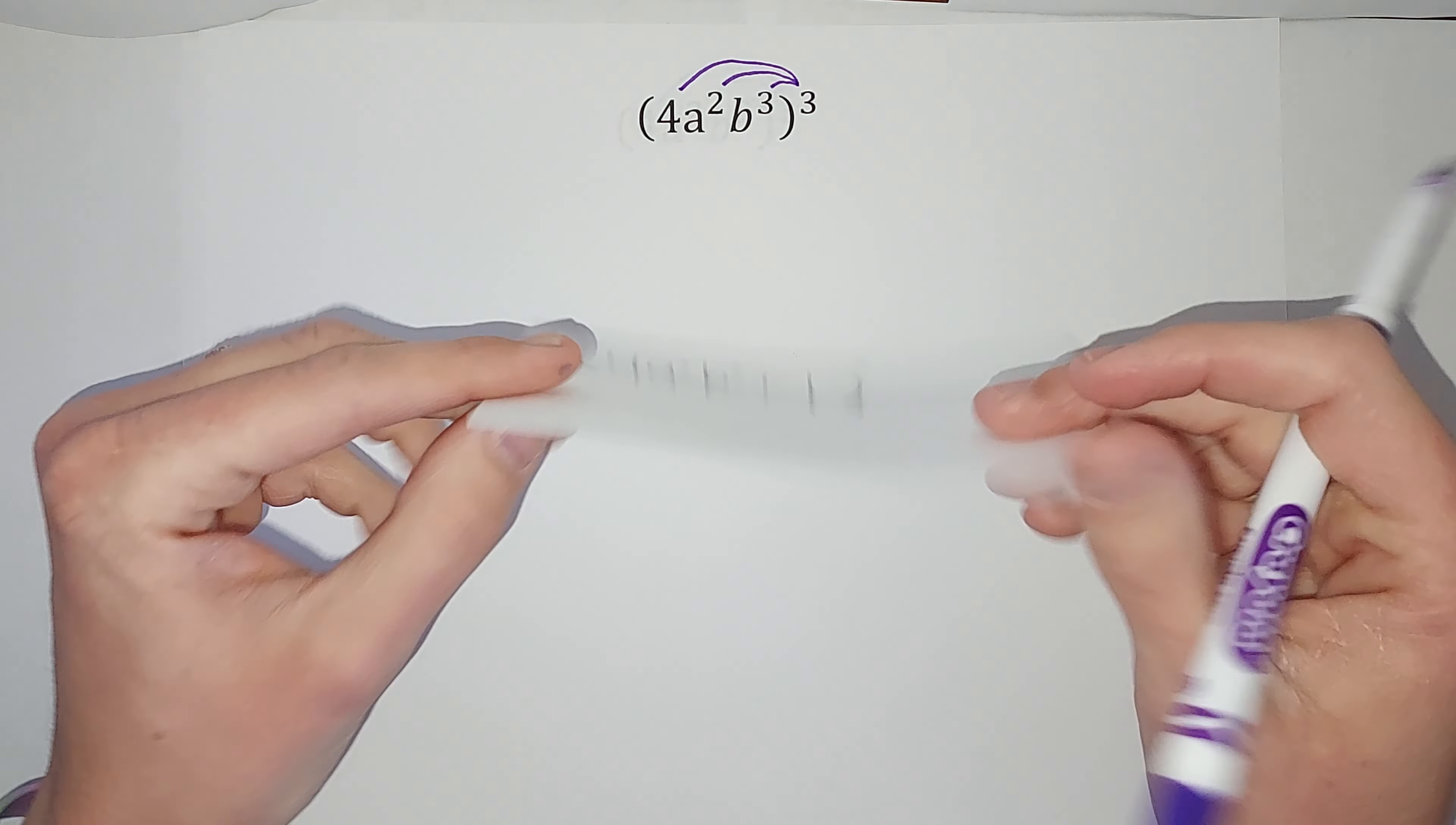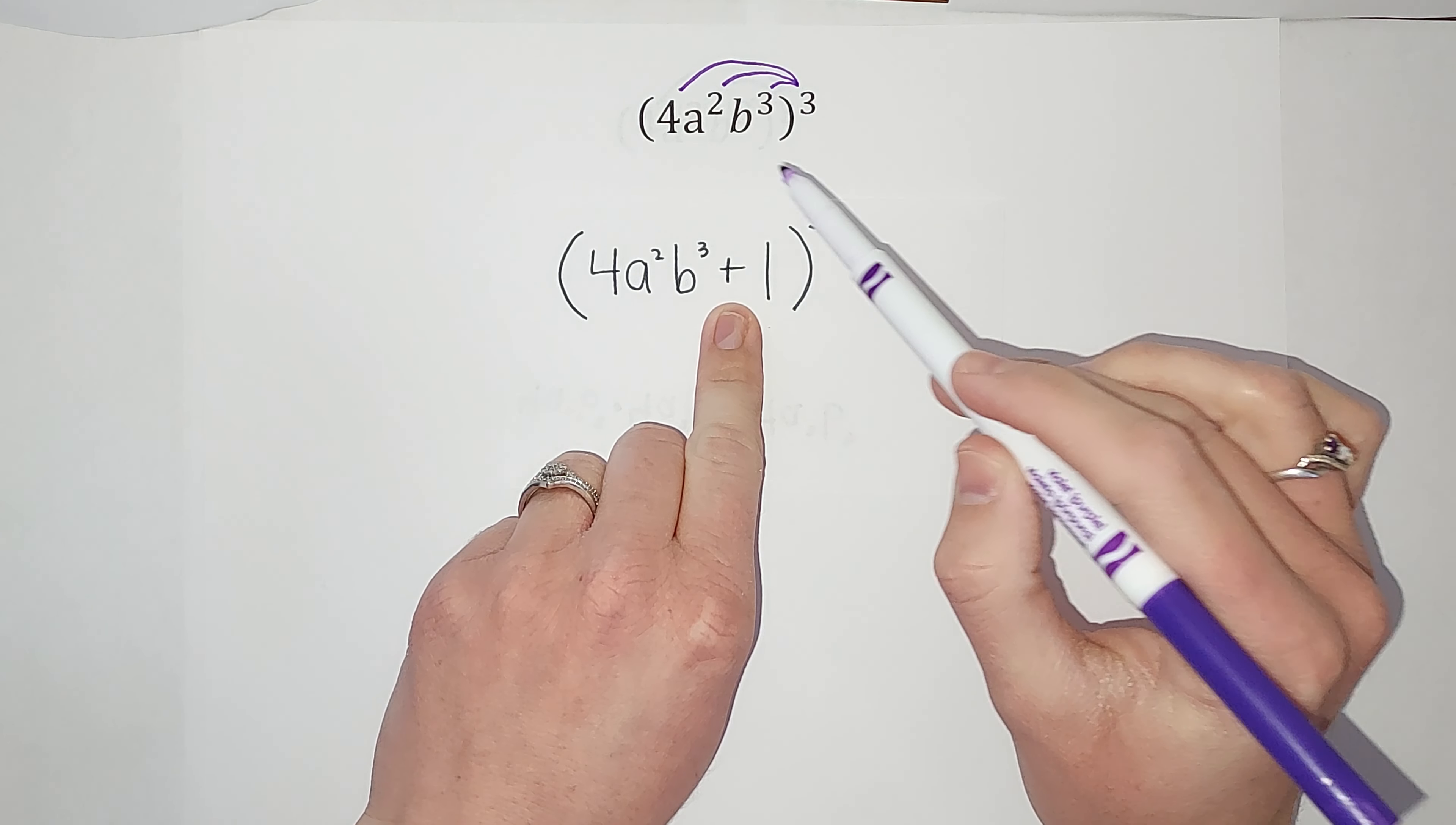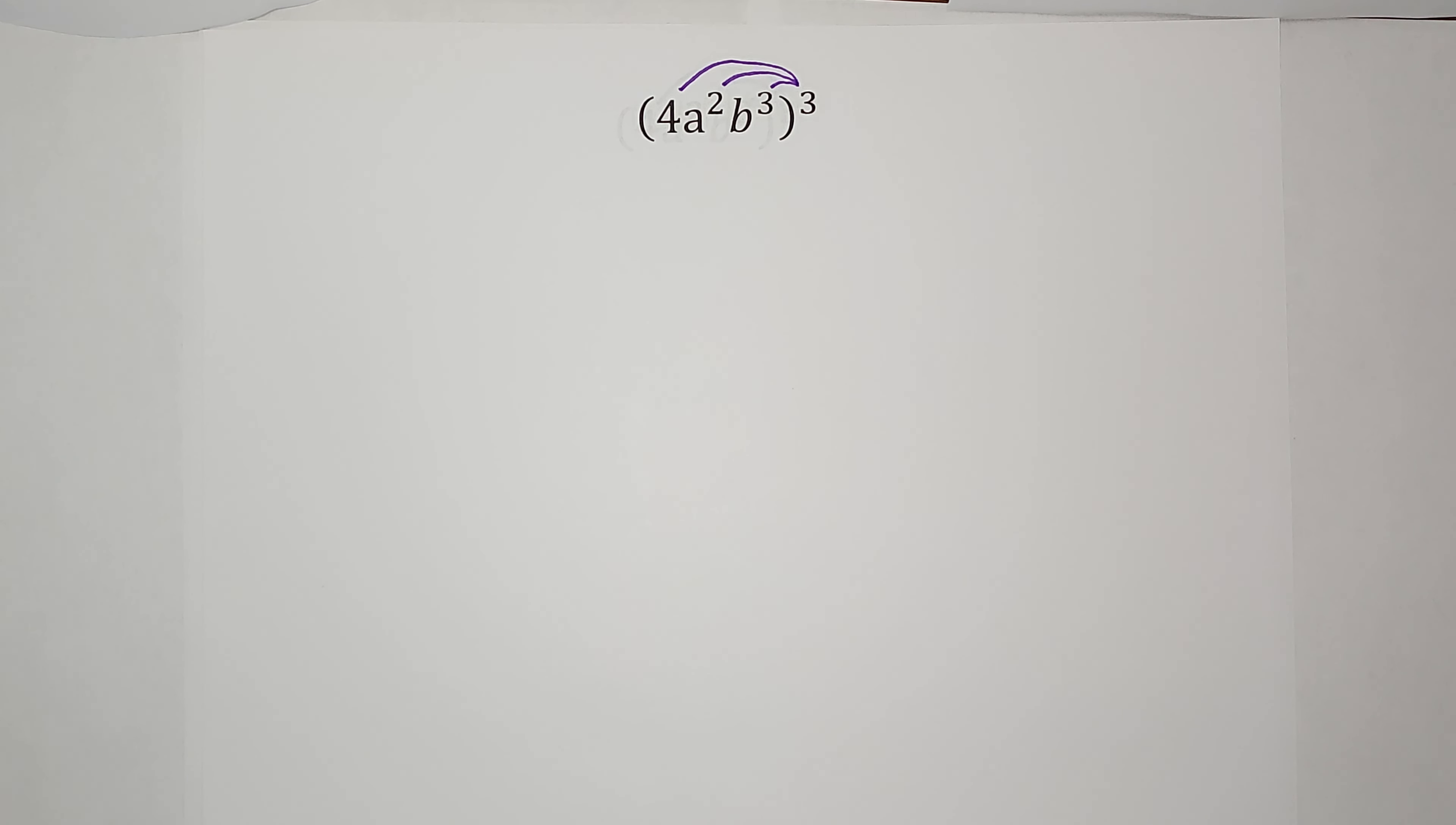Side note: if it were to have looked like this, with a one being added on the back or something, it's not the same. So I can't just distribute that cubed into each of them. But in this case, there's nothing being added or subtracted on the back, so we are good.